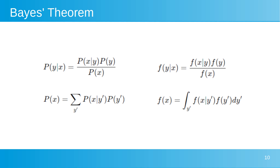Bayes' theorem provides a method for calculating the probability of an event based on conditional probabilities. This formula allows us to update the prior probability of an event with new data to obtain the posterior probability. Bayes' theorem is very useful for making decisions and improving predictions in situations of uncertainty.